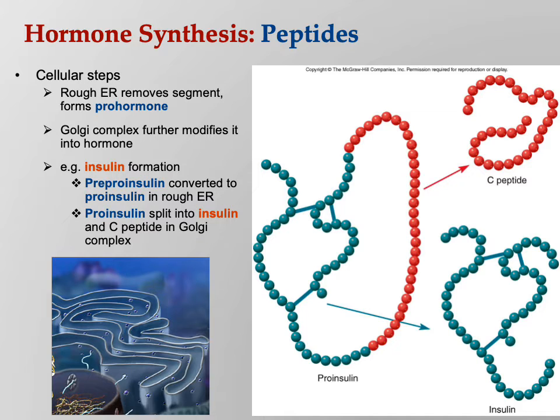You don't need to know the detailed steps. I'm just trying to show you that you make this precursor, chop off a part of it, and that activates the hormone itself. There's a Golgi apparatus in the lower left — remember, from Bio 156.